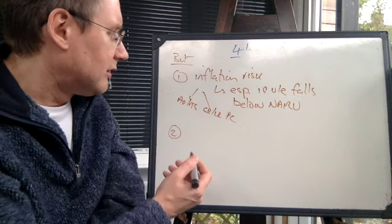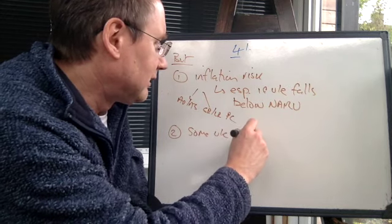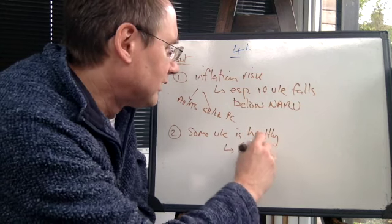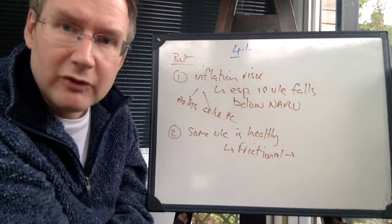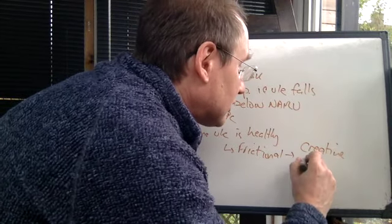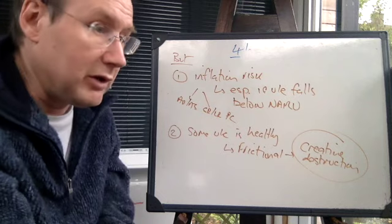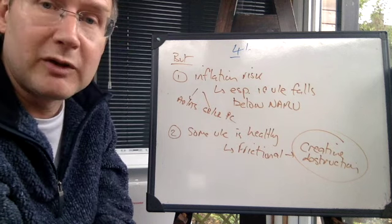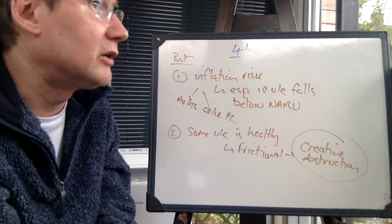Secondly, we could argue that actually, some unemployment is simply healthy. You can argue that some of it's frictional unemployment, for example. And frictional unemployment generally is a sign of the idea that workers are leaving one area of the economy to move into another. Some people would say that it's a sign of something like creative destruction at work, that some businesses are dying, other ones are succeeding. And that's simply a standard factor involving the healthy, dynamic, growing economy where resources get reallocated towards where consumers will need them or to where the economy is more efficient.